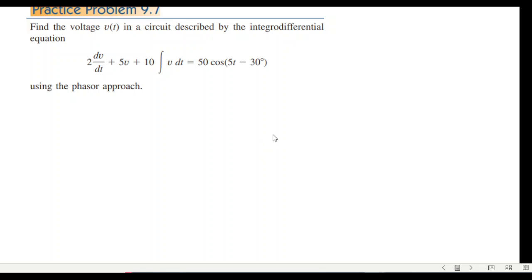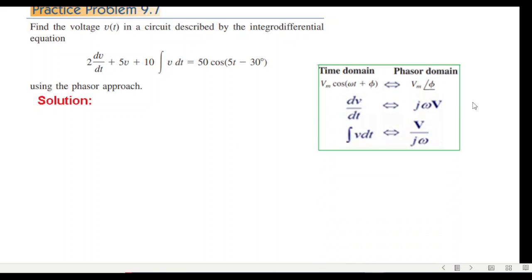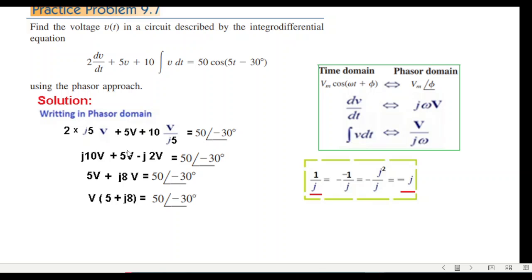Practice problem uses exactly the same technique. We have to use the formula and write in phasor form: 2 dv/dt becomes j omega 5V, plus 5V, plus 10 integral v dt becomes V divided by j omega, equals 50 angle minus 30 degrees.